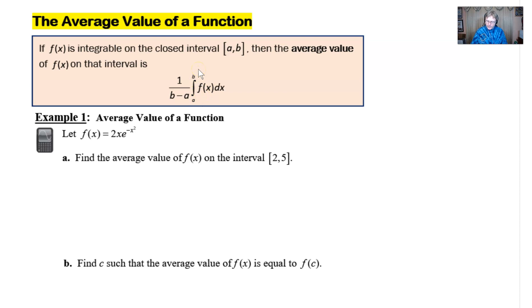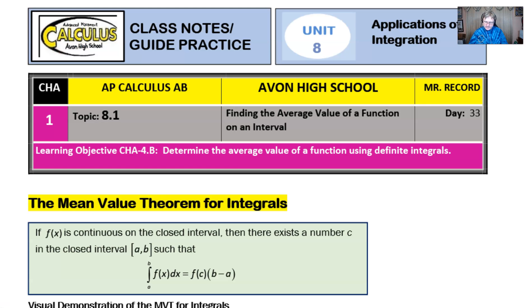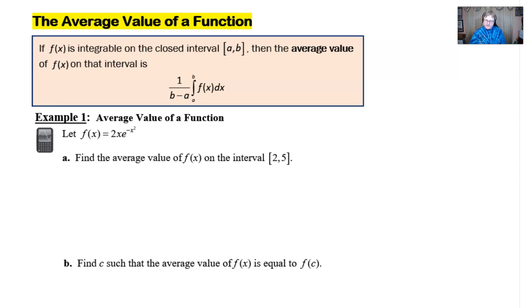If I can go back one last time to the previous page, and if I divide this b minus a over to the left, what happens is I have this f(c) by itself, and that f(c) is what this is really equivalent to. In simplest terms, f(c) is the average value of the function.